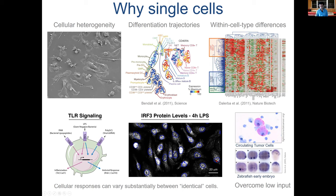Another reason to carry out single-cell profiling is rare cells. If you're looking at circulating tumor cells or the early zebrafish embryo with only eight cells, bulk RNA methods will completely miss tumor cells if they represent only one percent of the sample. Similarly, if you only have very few cells in your embryo, you might also miss important signals.